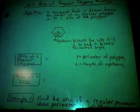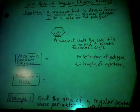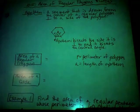Section 10-5 refers to the area of regular polygons and circles. Regular polygons are polygons that have all equal sides, and all interior and exterior angles are equal.